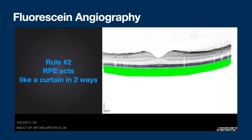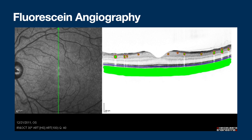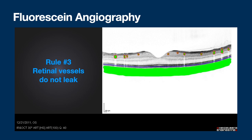Second rule: the RPE acts like a curtain in two ways. One — the RPE has zonulae occludentes, which form the outer blood-retinal barrier, so fluorescein can't pass through there unless there's a disease state like CSR. Two — fluorescein's emission in the visible green spectrum doesn't penetrate through the RPE, so the RPE blocks visibility of that light coming from underneath. Third rule: retinal vessels don't leak. That's the inner blood-retinal barrier — the endothelial cells with tight junctions keep fluorescein inside the vessels.